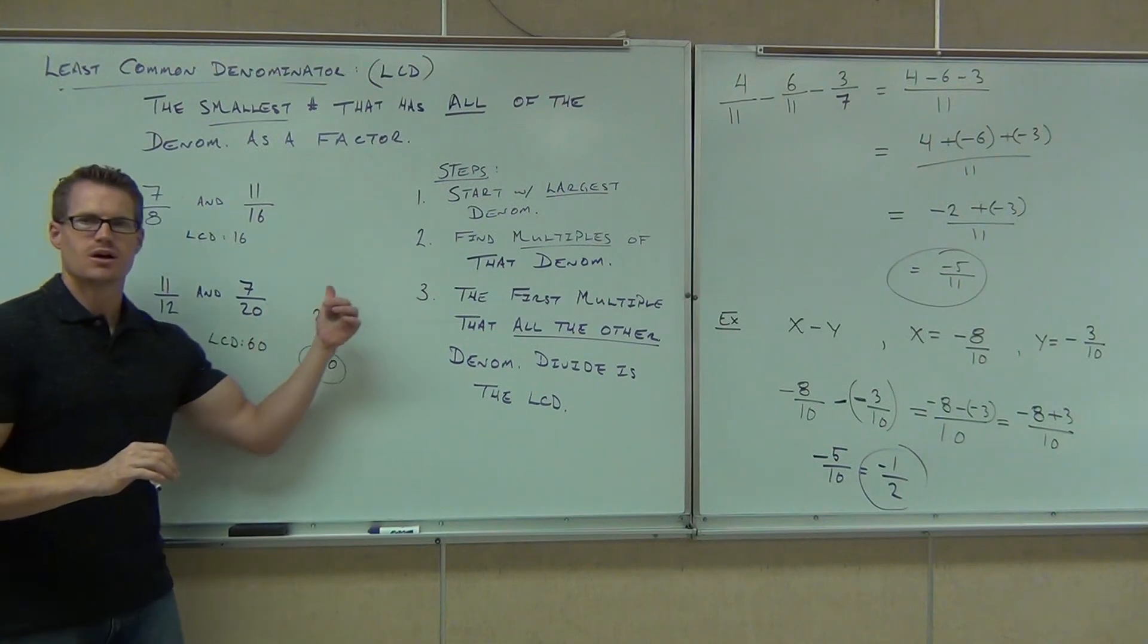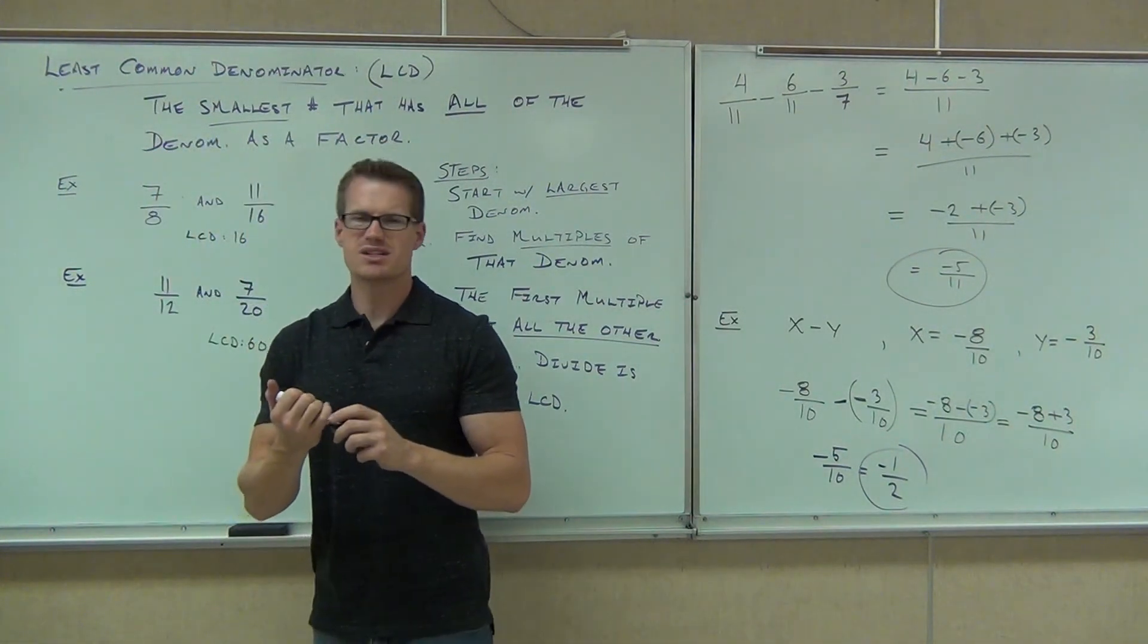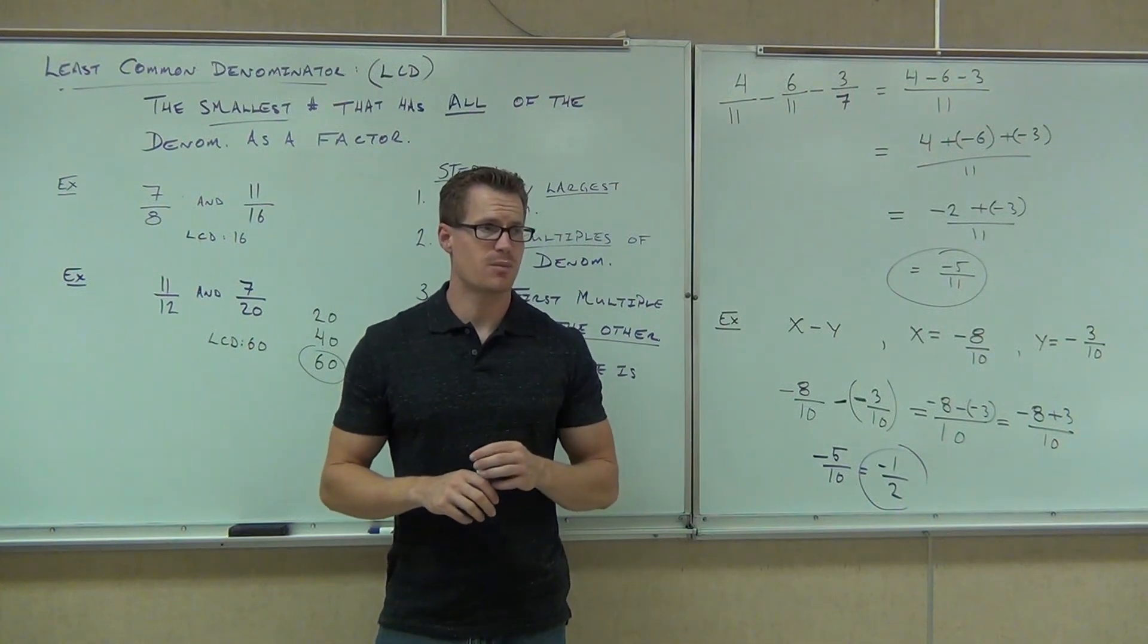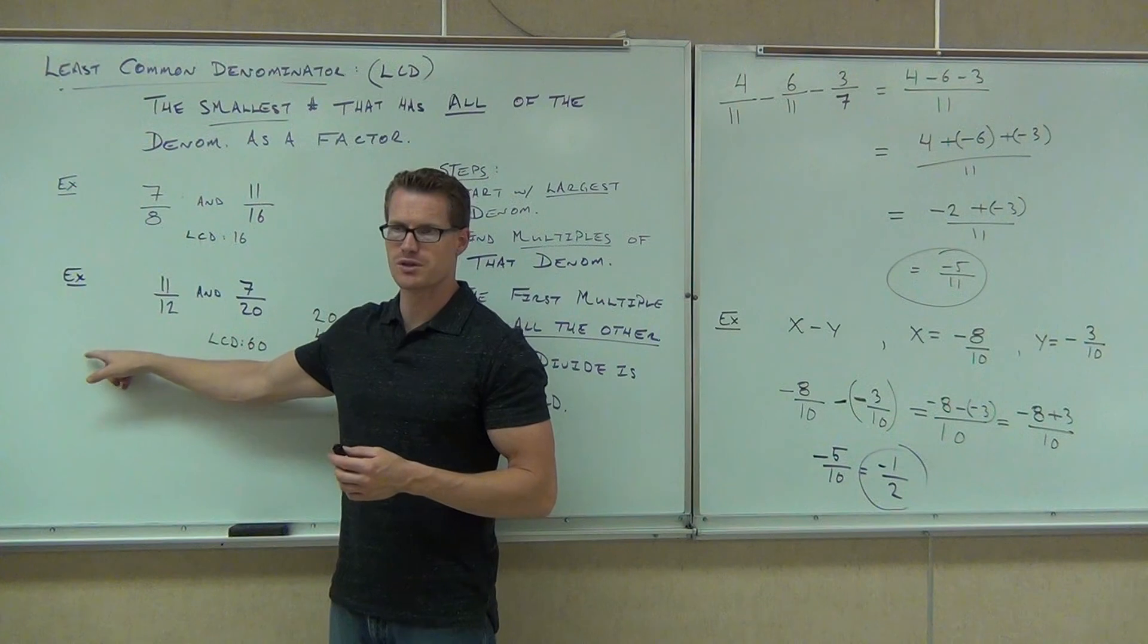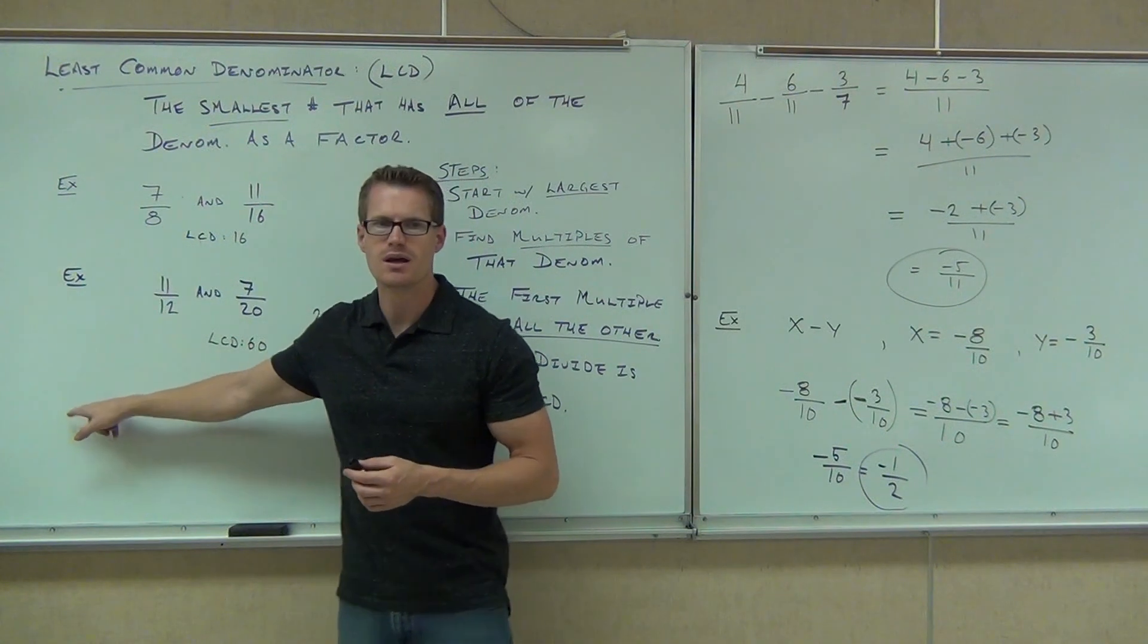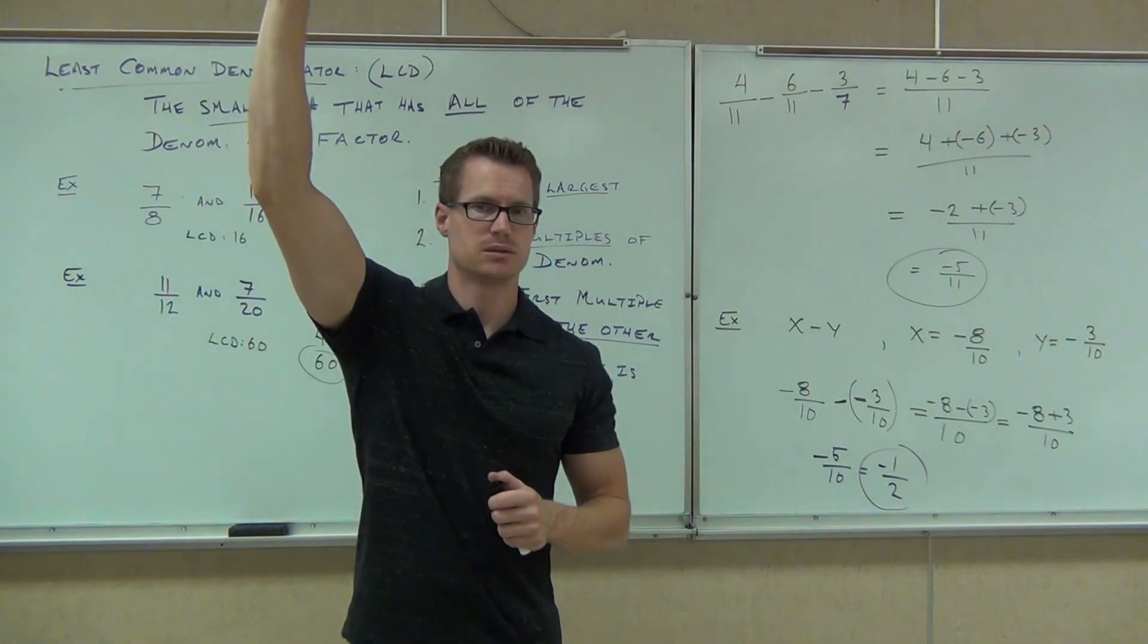So we take the largest one. We find the multiples. The first one that they both divide, that's your LCD. The reason why we don't start with the smallest denominator, you'd have to do more multiples. You'd have to do more work. You'd have to do 12, 24, 36, 48, and 60 before you found it. This is less work. Start with the biggest one. How many people understood what we've talked about today? Good.